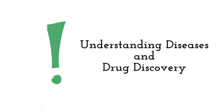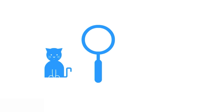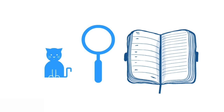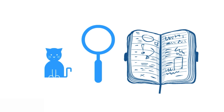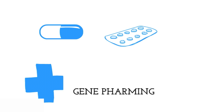One of the most significant uses of transgenic animals is in understanding diseases and drug discovery. Animal models of human disease are valuable resources for understanding how and why a particular disease develops, and what can be done to halt or reverse the process. The use of genetically engineered animals has also become routine within the pharmaceutical industry for drug discovery, drug development, and risk assessment.